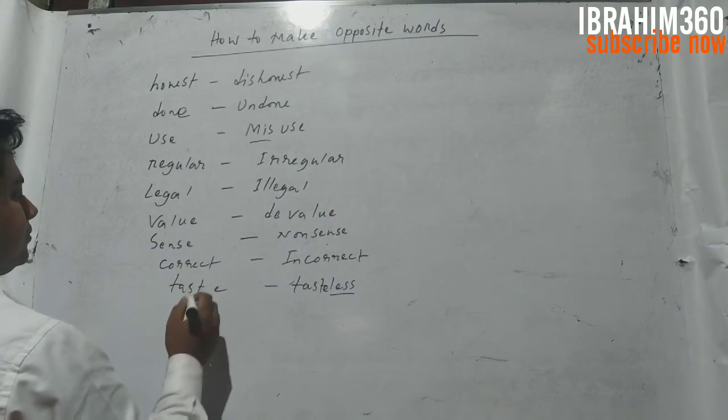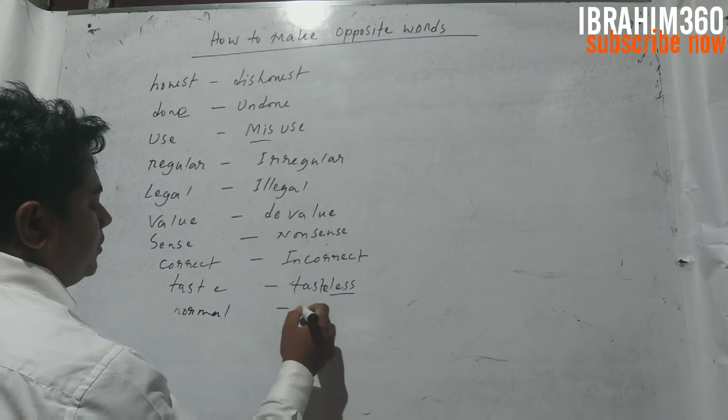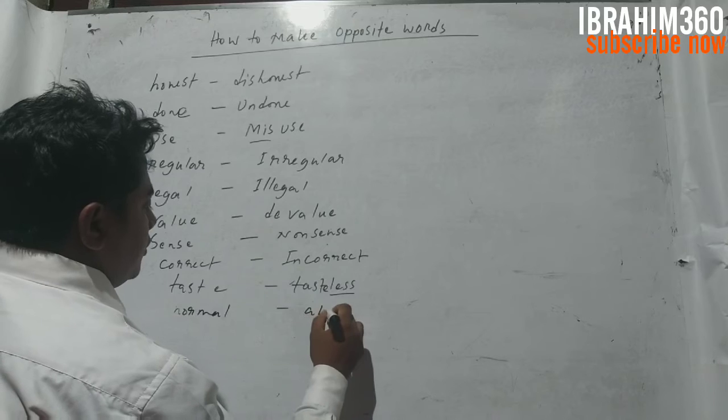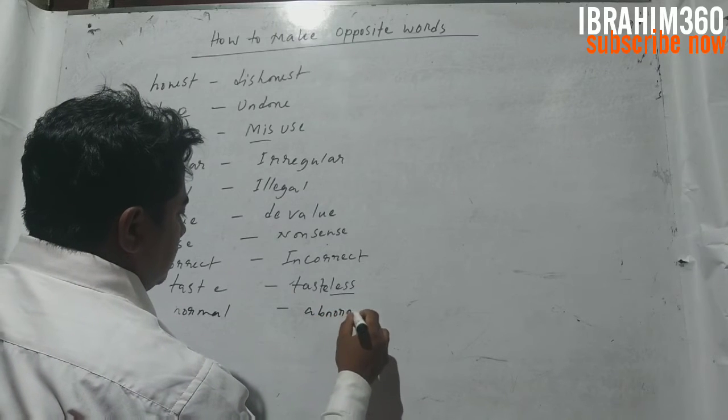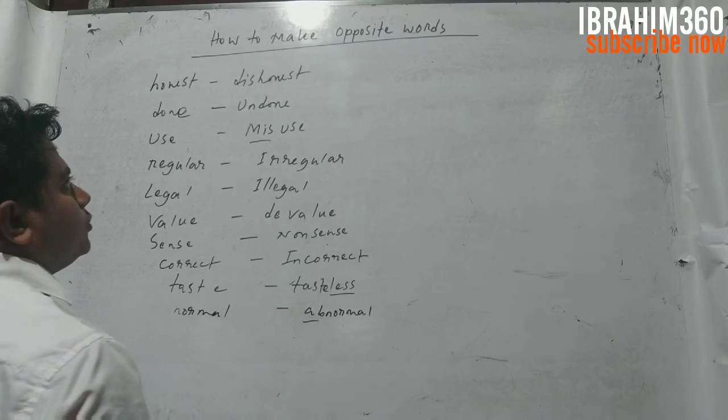Here normal. Normal ami normal e bipurit shabda ki likbo? Abnormal. Ab shabda ta paree kore ami ki kore echi? Opposite shabda likechi.